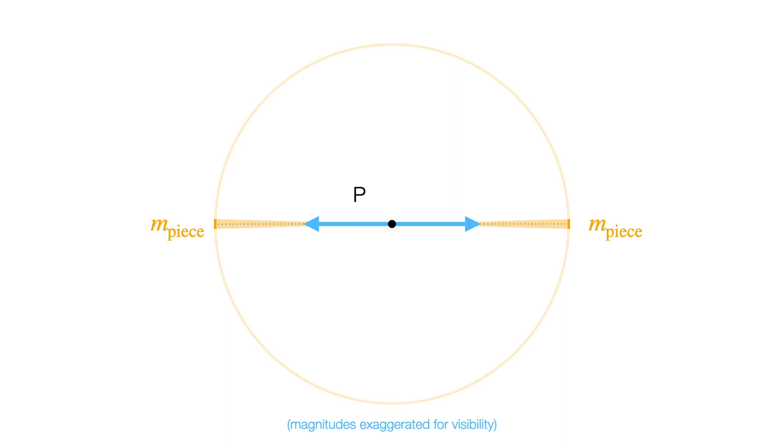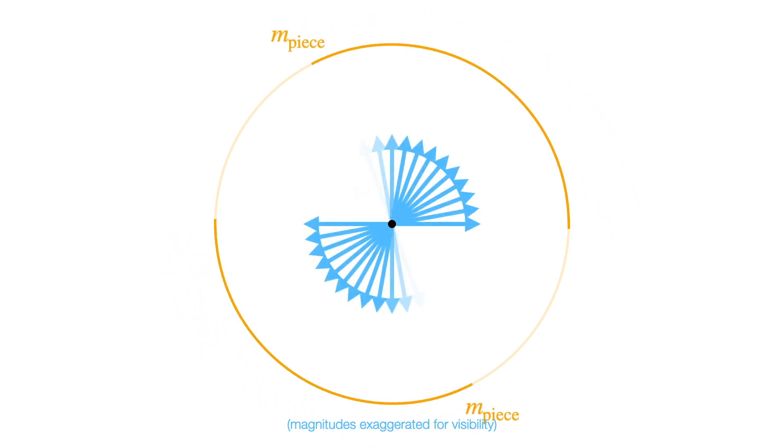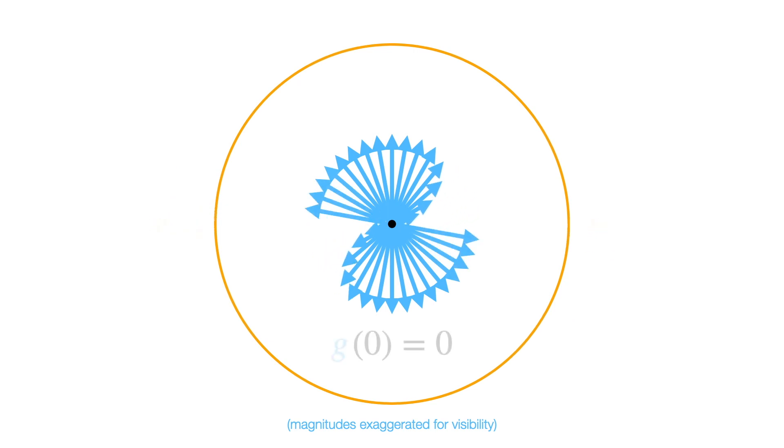Like a tug-of-war that's perfectly balanced, these two forces exactly cancel out. But the whole shell itself is made up of pairs of mass pieces like this, so for any direction you pick, the vector pointing that way has a unique partner that perfectly cancels it out. Meaning g at the center has to be zero.